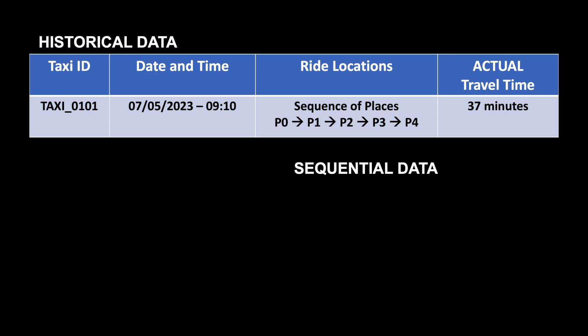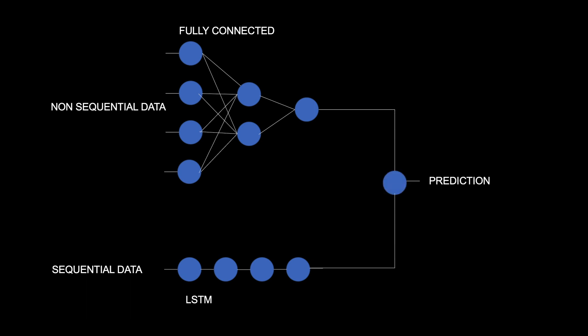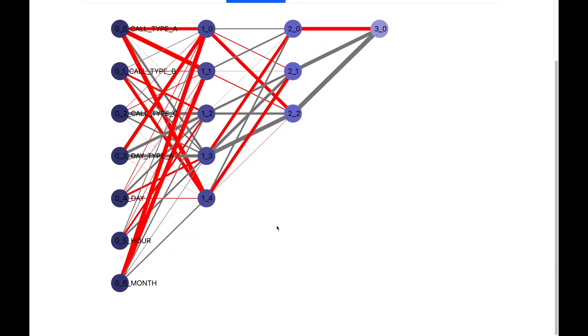Our data has sequential data, such as the sequence of places the taxi goes through, and also non-sequential data, such as the time and date of travel and the start and stop places. When you have both sequential and non-sequential data, one efficient architecture is a deep learning architecture with two main components: a fully connected layer for non-sequential data, and an LSTM layer for the sequential data.